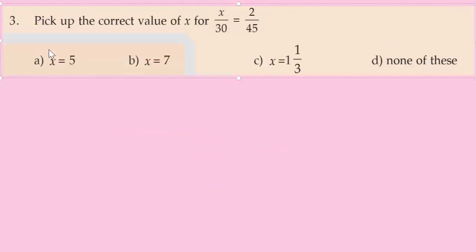Question number 3: pick the correct value of x for x/30 = 2/45. Options are: 5, 7, 1, 1/3, and none of these.